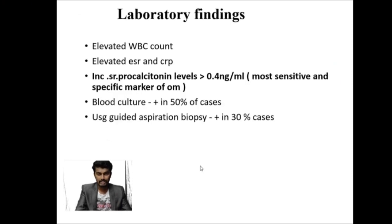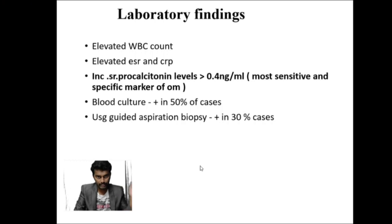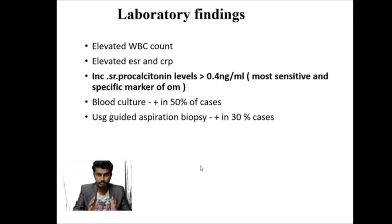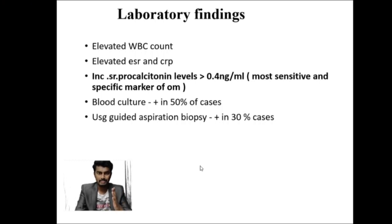Laboratory findings include elevated WBC count with fever, elevated ESR (marker of chronic inflammation) and CRP (marker of acute inflammation). The most sensitive and specific marker for osteomyelitis is serum procalcitonin levels greater than 0.4 nanogram per mL — an important MCQ point. Blood cultures are positive in only about half of cases. Ultrasound-guided aspiration is least sensitive, positive in only 30% of cases.